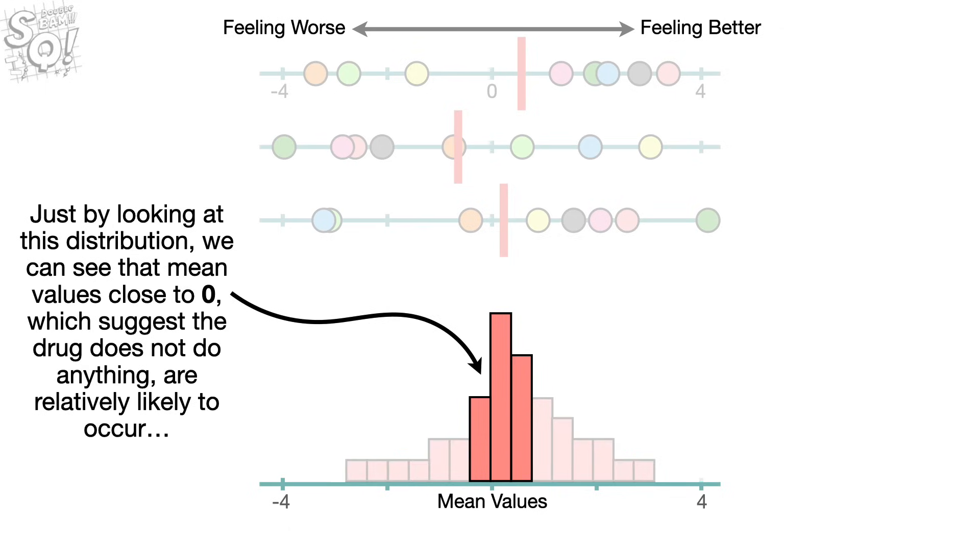Just by looking at this distribution, we can see that mean values close to 0, which suggest that the drug does not do anything, are relatively likely to occur.